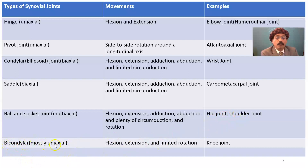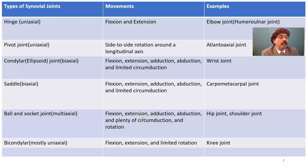Bicondylar joint — example is the knee joint — has very limited rotation and mostly flexion and extension. The condylar joint is mostly uniaxial; when it rotates, it uses another axis with very limited rotation and no circumduction. In contrast, the ball and socket joint such as the shoulder allows plenty of circumduction, flexion, extension, adduction, and abduction — like the shoulder movement used by a fast bowler in cricket.